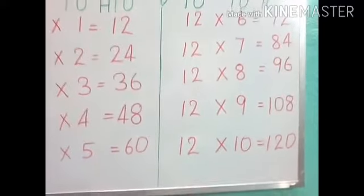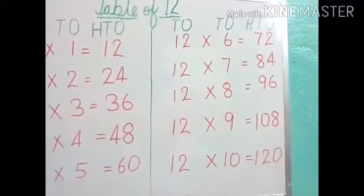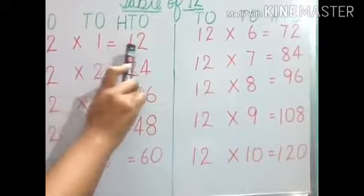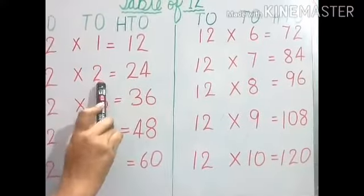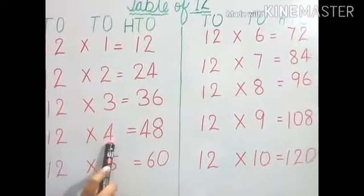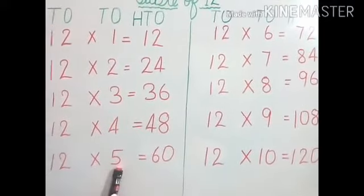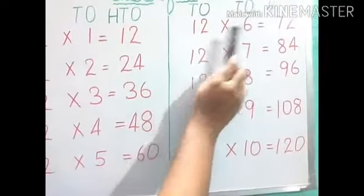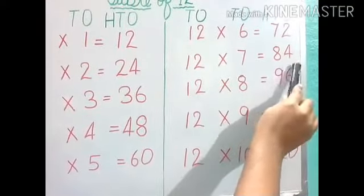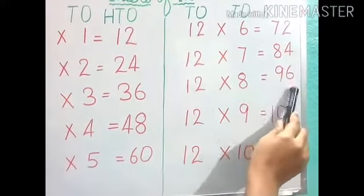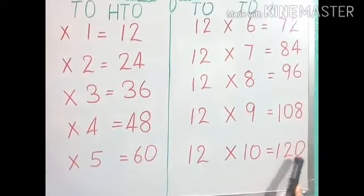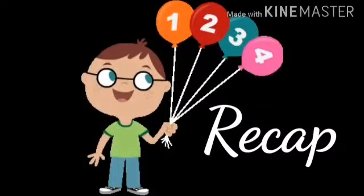Now from the beginning again we will read the table of 12. 12, 1s are 12. 12, 2s are 24. 12, 3s are 36. 12, 4s are 48. 12, 5s are 60. 12, 6s are 72. 12, 7s are 84. 12, 8s are 96. 12, 9s are 108. 12, 10s are 120.